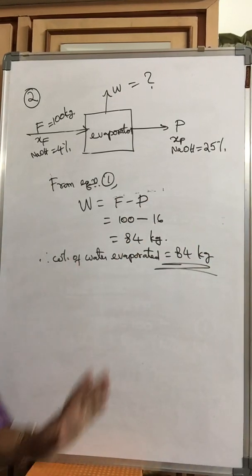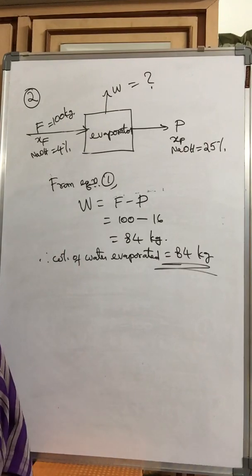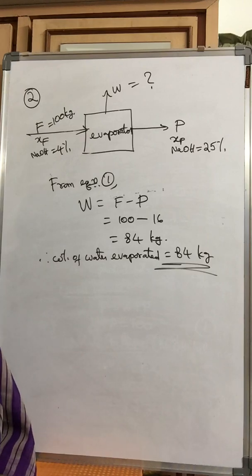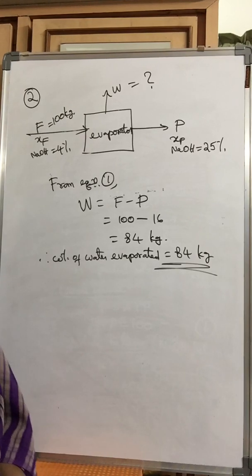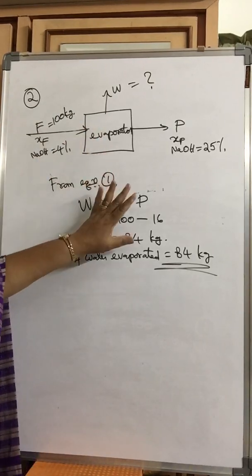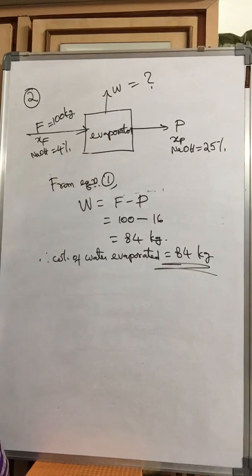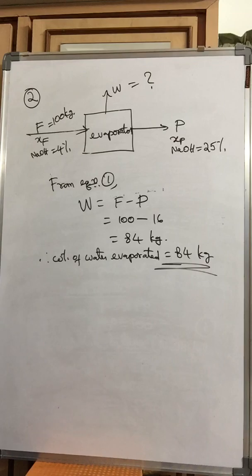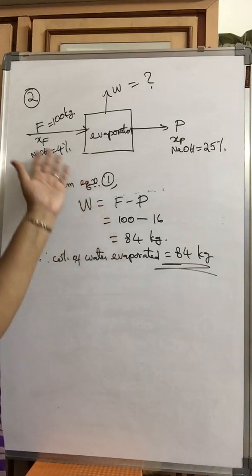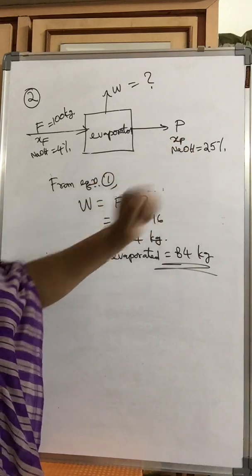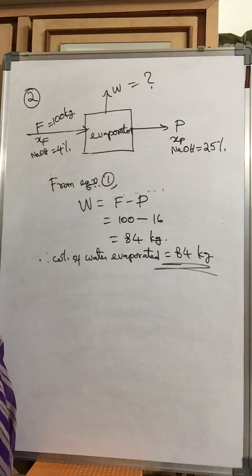Thus we have learned how to write the material balance equation in the unit operation of evaporation — specifically evaporation without crystallization. If crystallization were present, one more stream would appear. By writing these balances, we can find how much water is evaporated and how much product is formed. Thank you.